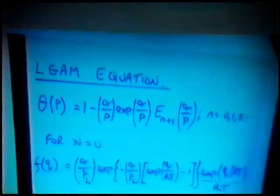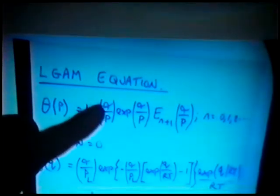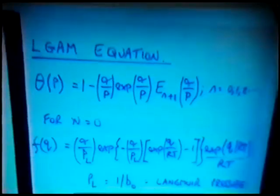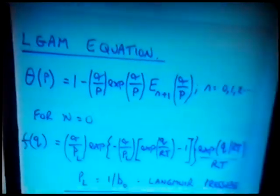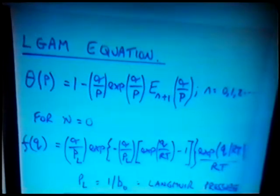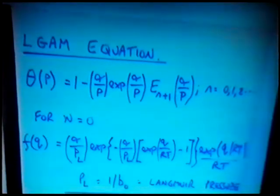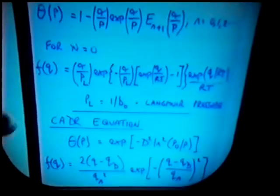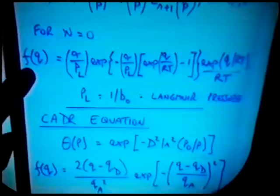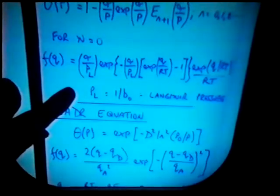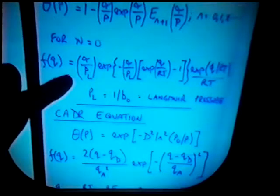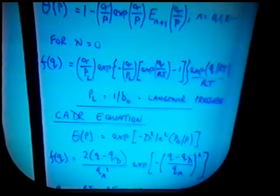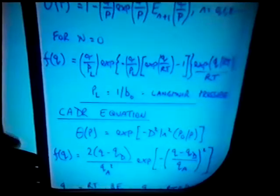Integration using the L-GAM approximation — the gamma-type function — gives a rather fearsome-looking expression, where alpha is a parameter of the equation, and E_{n+1} is the (n+1)-order exponential integral of alpha over p, and n is an integer. In our work, and in much of the work published by Sarkar, it turns out that n equals zero for our parameters, indicating a heterogeneous adsorbent. In that case, the distribution function is given by an equally complex expression involving the function alpha over p_L, where p_L is the reciprocal of the pre-exponential in the Langmuir constant b — called the Langmuir pressure in this work.